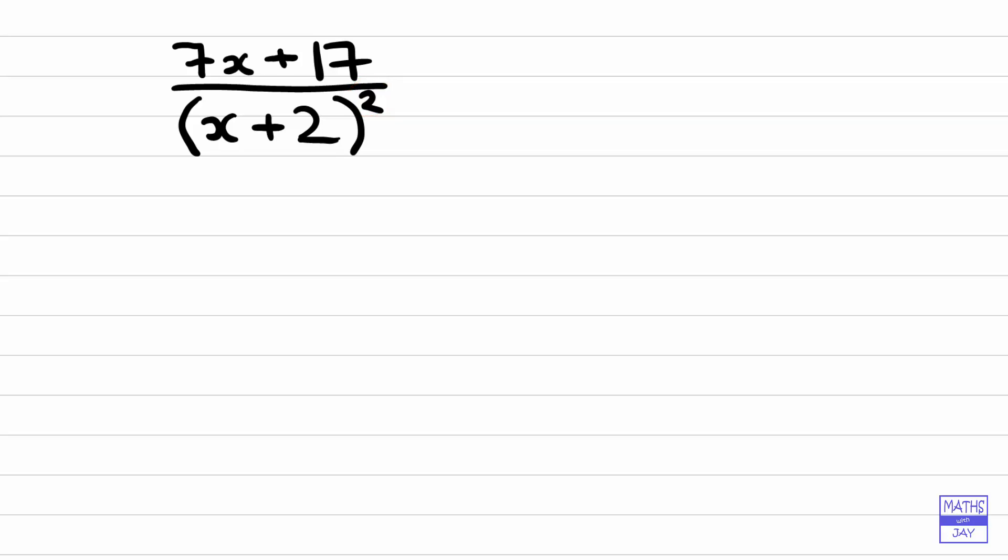But what we do first of all is we rewrite the numerator. So we're leaving the denominator as it was. And what we're looking to do is to have x plus 2 appear in the numerator. So I'm just going to write that in first of all. So that's just a factor of the denominator.